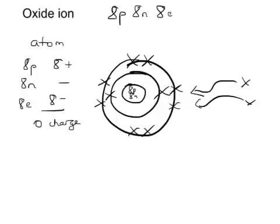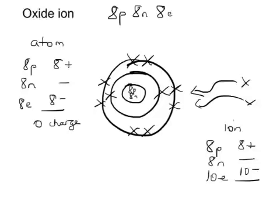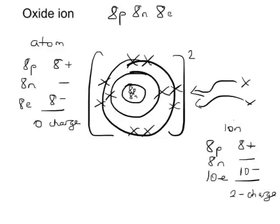Now, as an ion, it's got 8 protons — still 8 plus charges — and 8 neutrons still with no charge, but it's now got 10 electrons, which means it's got 10 minus charges, and so overall it's got a 2 minus charge. So when we draw that, we put a square bracket around it and put a 2 minus charge outside — it would be the oxide ion, 2 minus.